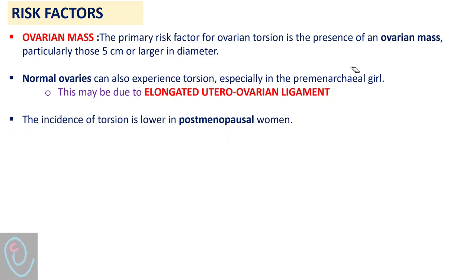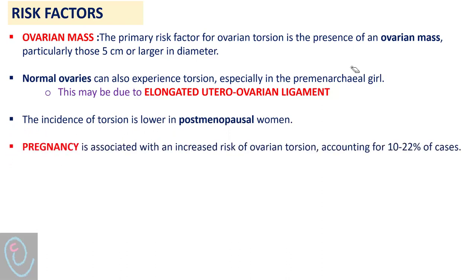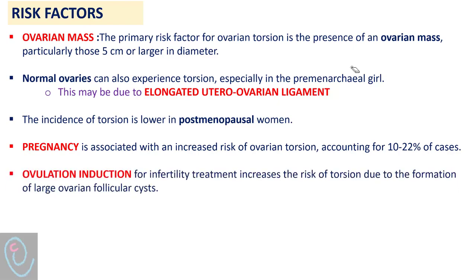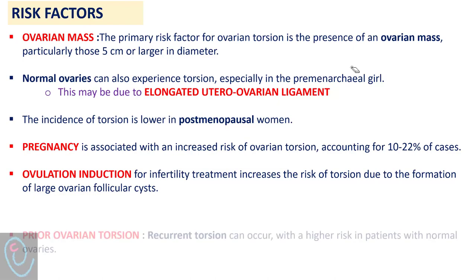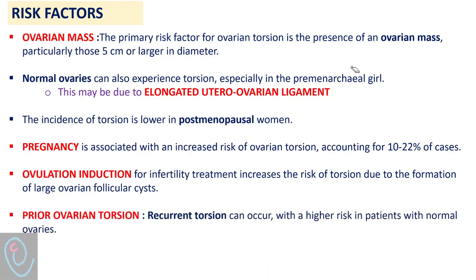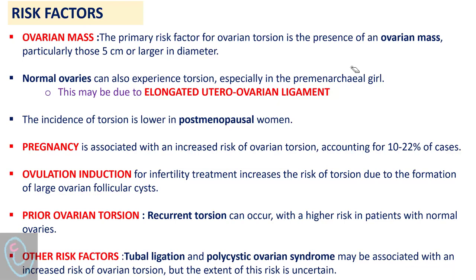The incidence of torsion is lower in post-menopausal women. Pregnancy is another risk factor, accounting for about 10 to 22% of cases. Ovulation induction is another risk factor because it is associated with the formation of large ovarian follicular cysts. Prior ovarian torsion is another risk factor. Other risk factors include tubal ligation and polycystic ovarian syndrome.